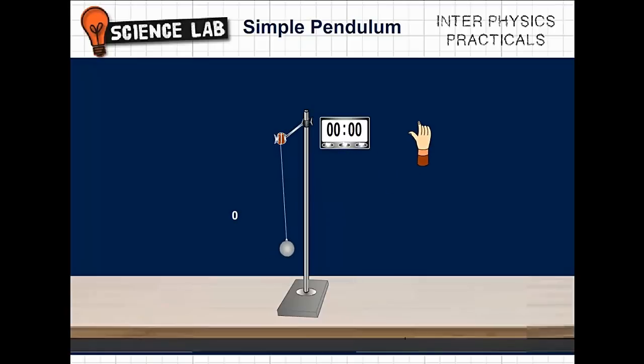Start the stopwatch. Count for 20 oscillations of the pendulum. Stop the stopwatch after 20 oscillations. Note the time period T1 for trial 1 and repeat the process for trial 2.